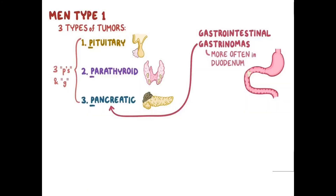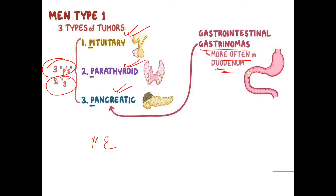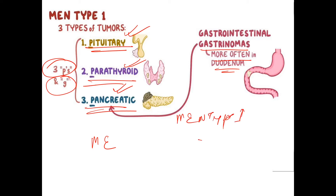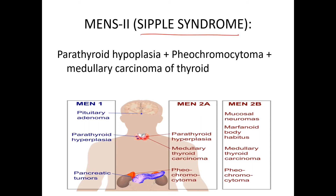MEN Type 1 — Multiple Endocrine Neoplasia Type 1 — involves a pituitary tumor. MEN Type 1 is also known as Wermer syndrome. In MEN Type 1 we have 3P, in MEN Type 2A we have 2P, and in MEN Type 2B we have 1P.